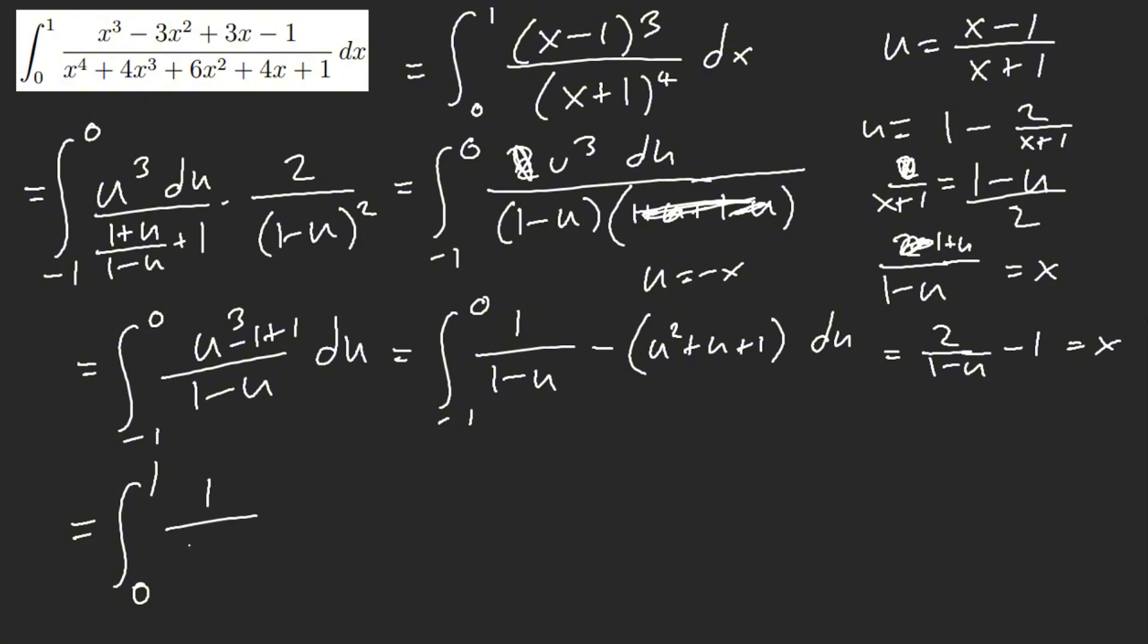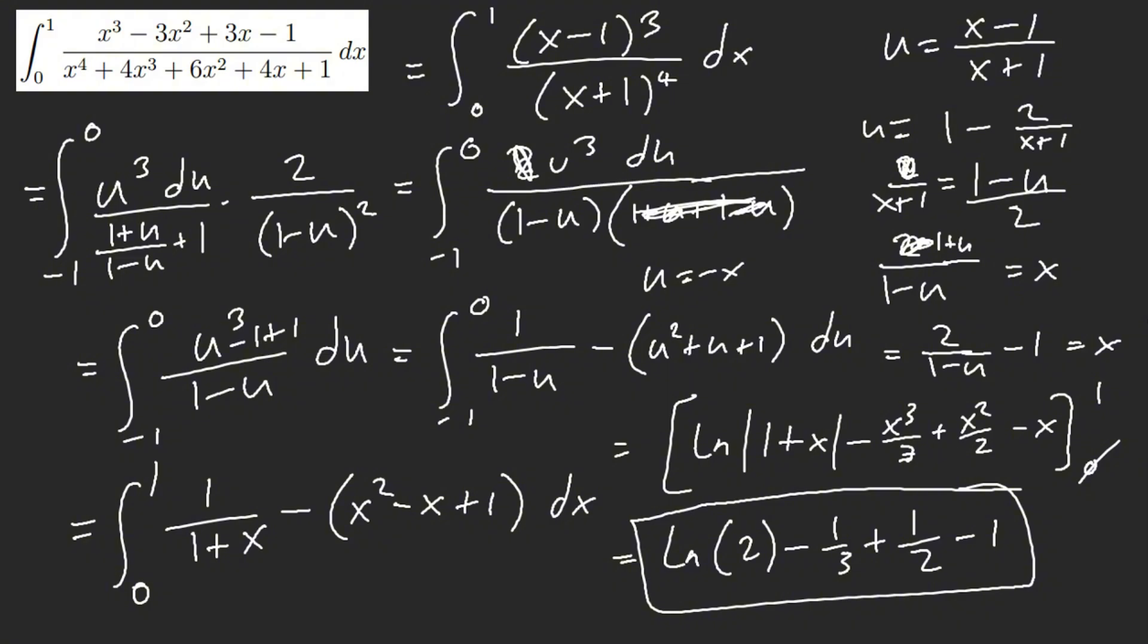So I would get, what, 1 plus x. And then x squared minus x plus 1. So give me ln of... At this point, there's no going back. I'm already here. So x cubed over 3 plus x squared over 2 minus x from 0 to 1. That's going to cancel out. So ln of 2 minus 1 third plus 1 half minus 1. Okay. And there you go. That is also, I think that's also correct, too.